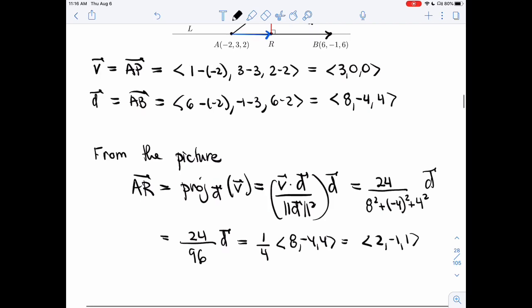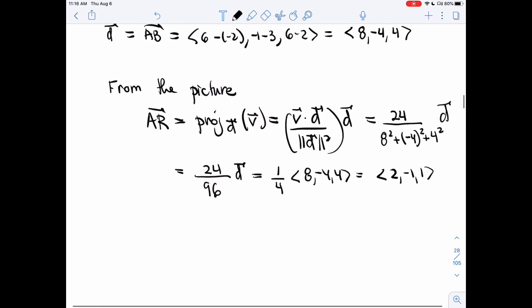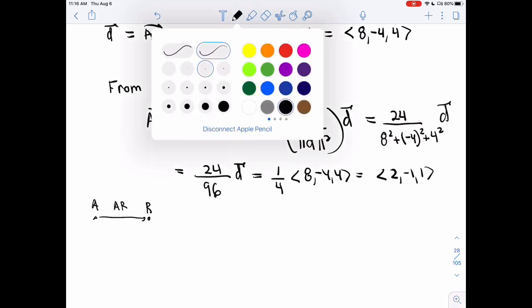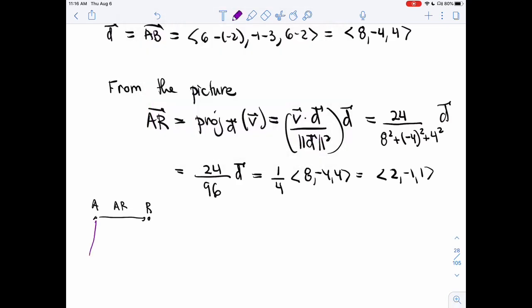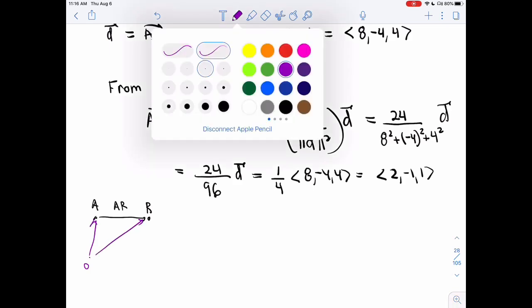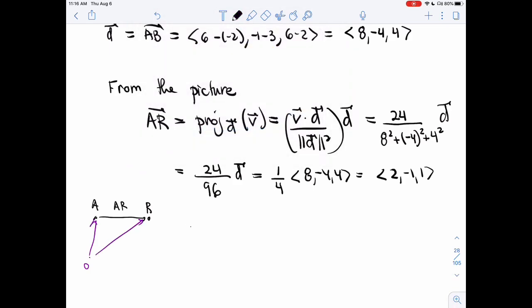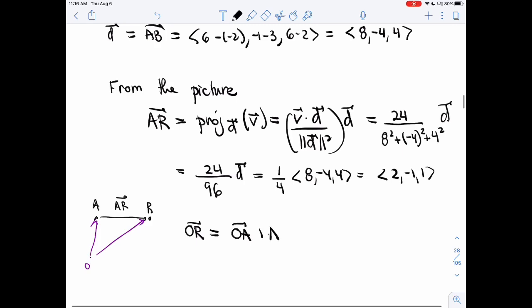So now I want to find R. So we have A, we have AR, and we want R. So I'm going to do the usual thing where I get from 0 to A, 0 to R. So OR is OA plus AR.